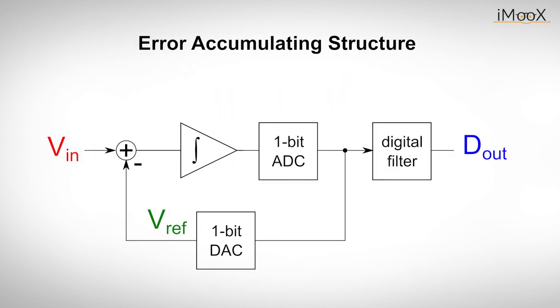Or, if we transfer the thought to an electronic circuit, x is the input voltage Vin, y the output value Dout of a 1-bit ADC and u is the output value of a digital-to-analog converter, which is either 0 or Vref. This traditional structure used to represent the functionality of a delta-sigma ADC is called error-accumulating structure.